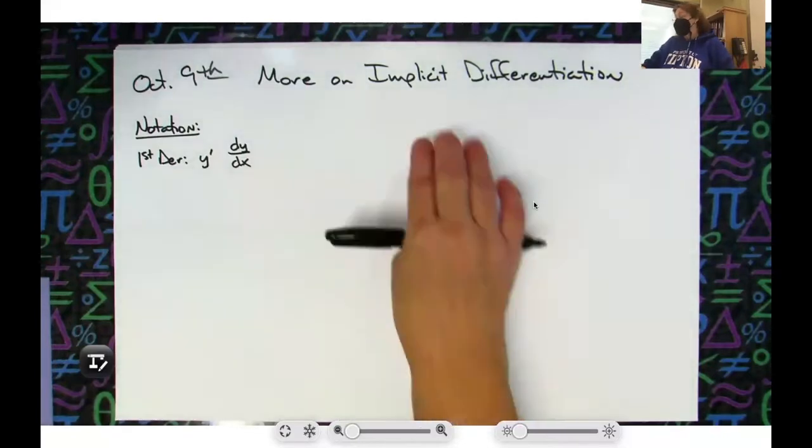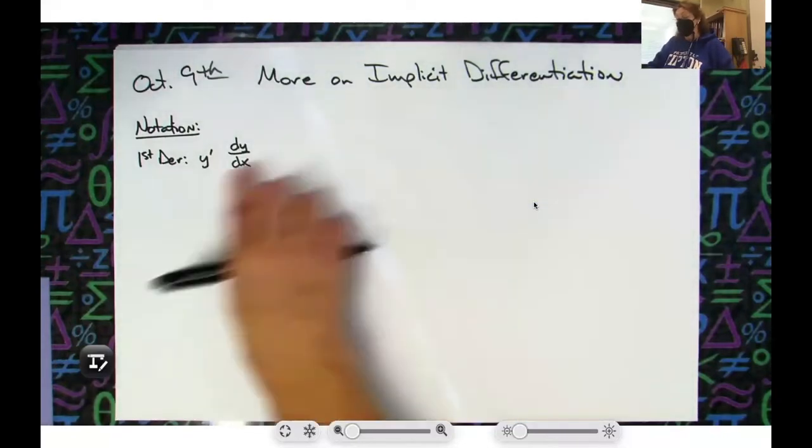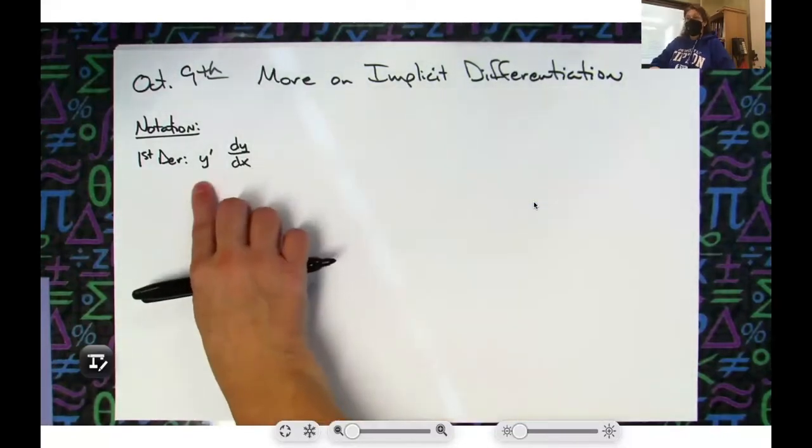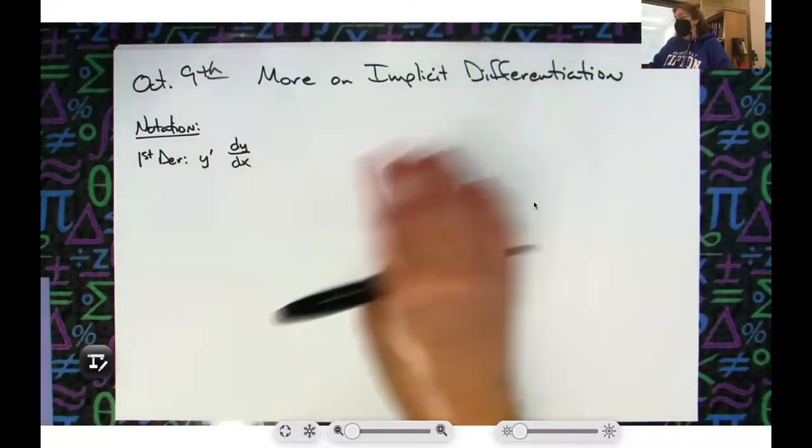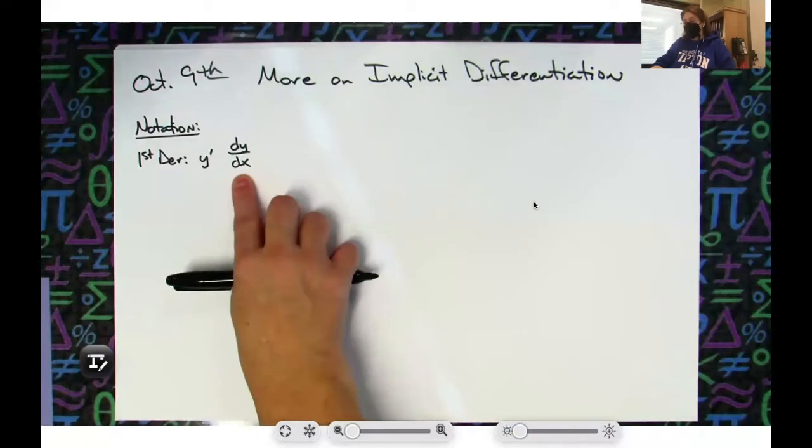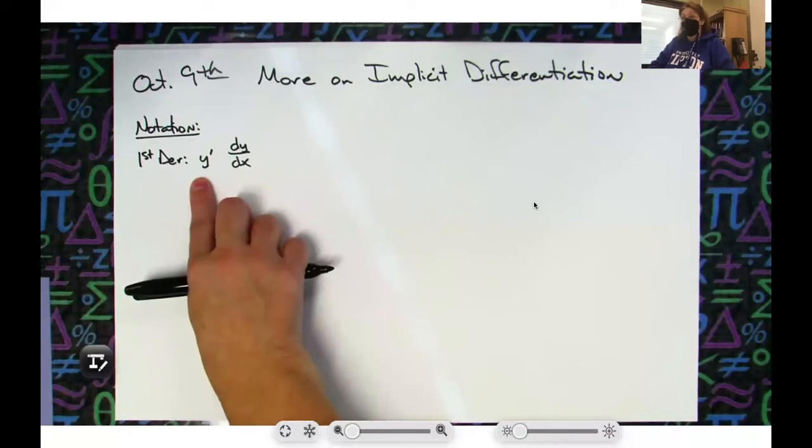But if you go out and you just YouTube a video on implicit differentiation, the person is probably going to put a dy over dx in every place where we put a y prime. It's legit notation. We will use this notation when we go to related rates because it makes more sense to me to explain it to you guys that way.